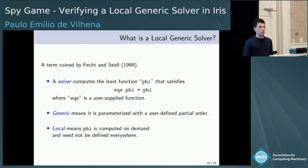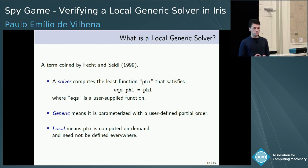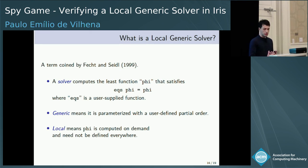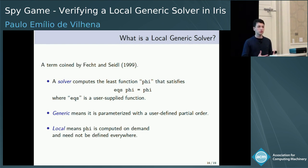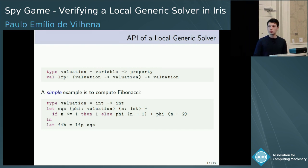Local generic solvers are the algorithms for computing fixed points mentioned at the beginning of the talk. They take as input a function EQS and return a function phi such that EQS of phi equals phi. They are called generic because phi is the least to satisfy this equation for an order defined by the user. They are local because the function does not need to be defined everywhere — it is a partial function computed on demand.